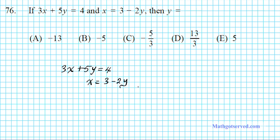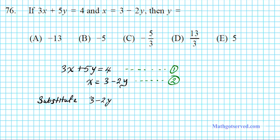What method can we use to solve this? There are various methods: you can use elimination, substitution, graphing, or even matrices to solve a system of equations. But whenever you have a variable isolated — as in this case, x is isolated in the second equation — it's advisable to use the substitution method. So let's call the first equation 1 and the second equation 2. We're going to substitute 3 minus 2y for x in equation 1.